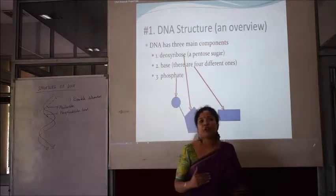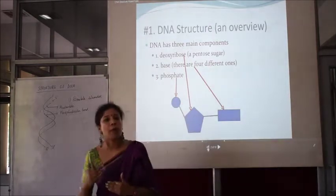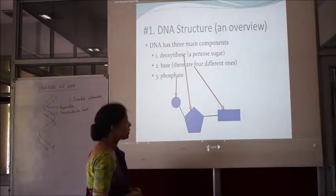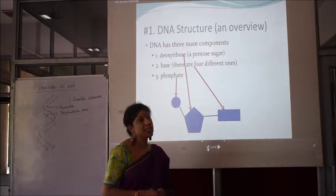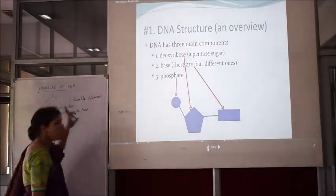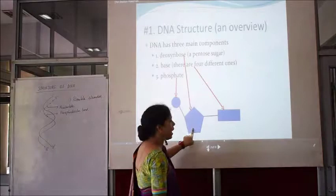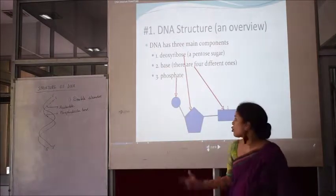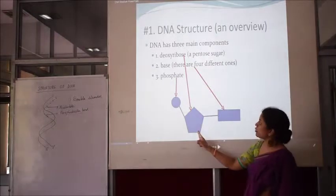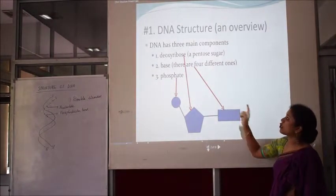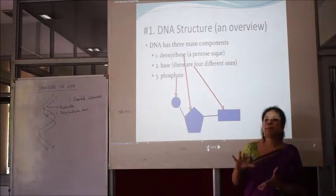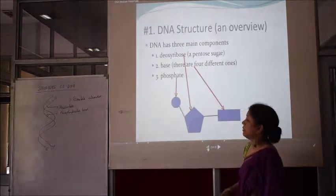Going into the detail of the structure of DNA, let's first study the structure of its monomers, which are called nucleotides. As you can see, a nucleotide has three major components. One is deoxyribose sugar, which is present in the structure of the nucleotide. The second component is called the base — the bases are of four different types in DNA, basically divided into purines and pyrimidines. The third component is a phosphate.